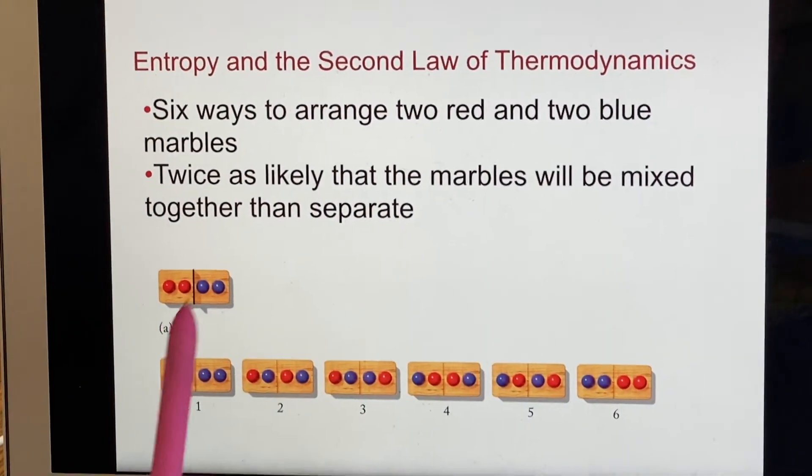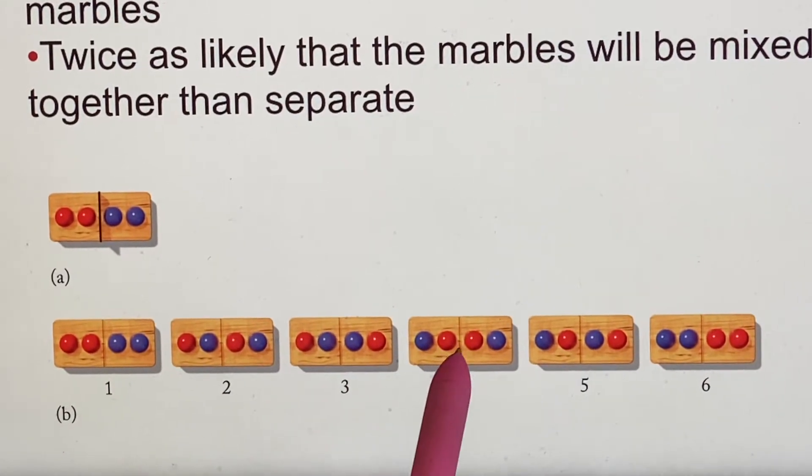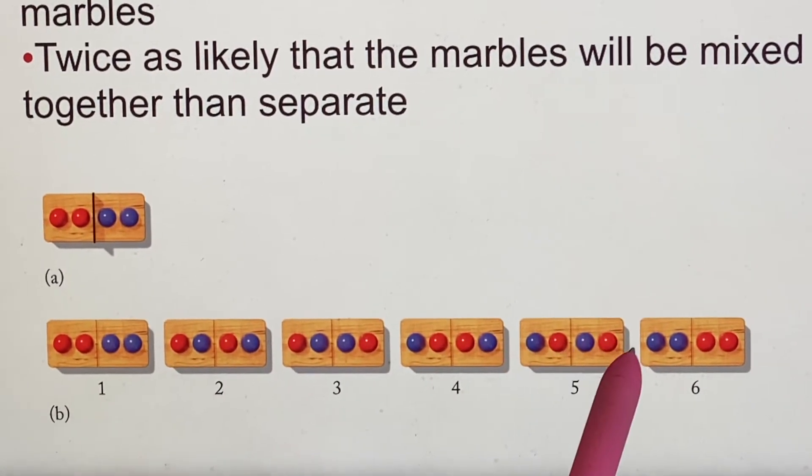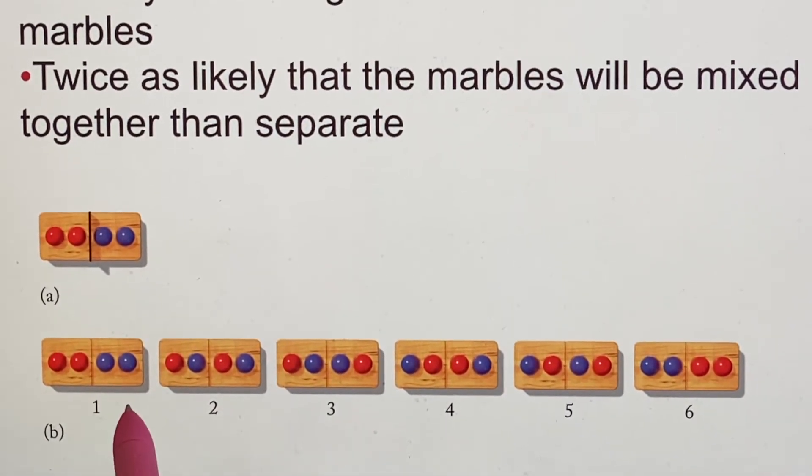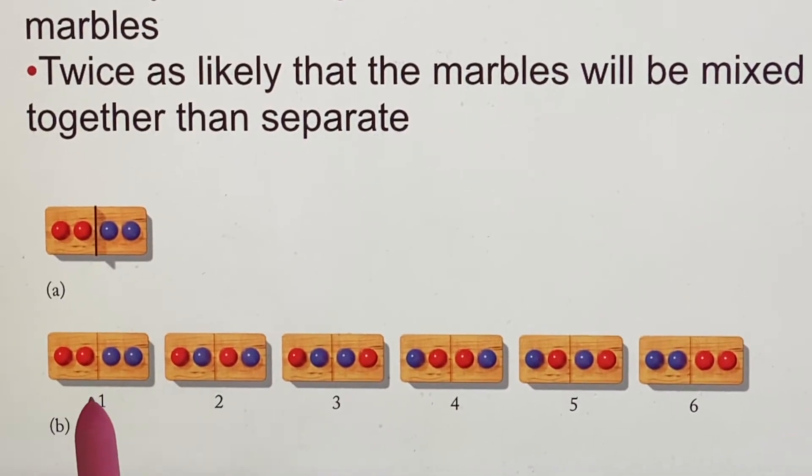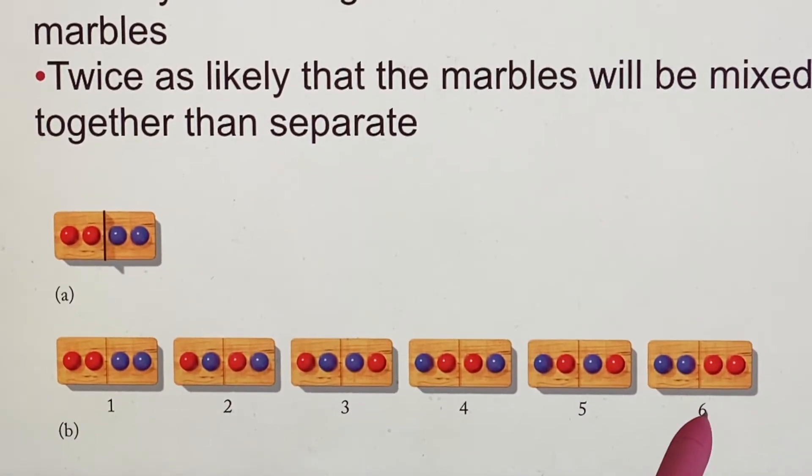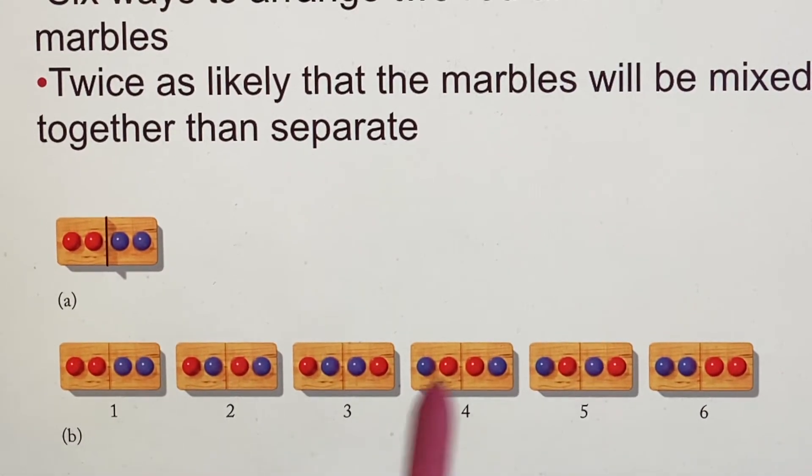You could arrange them as red-blue, red-blue-red-blue, red-blue-blue-red, blue-red-red-blue, blue-red-blue-red, or blue-blue-red-red. What we can see is if we're trying to want them to be separated, we could say that case one and case six were separated. All the other cases, they are mixed together.